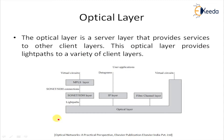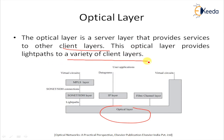This is a basic diagram of the optical layer performing with the different layers available. The introduction of second generation networks adds another layer in the protocol hierarchy called the optical layer. The optical layer is a server layer that provides services to other client layers and provides light paths to a variety of client layers, including IP, Ethernet, SONET, HDLC, as well as other possible protocols such as Fibre Channel.